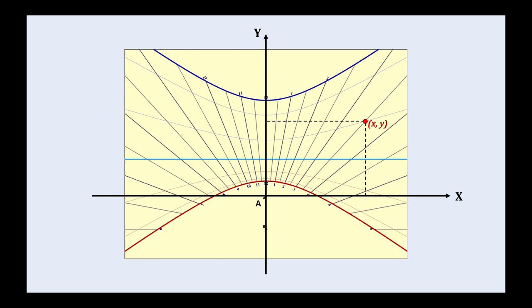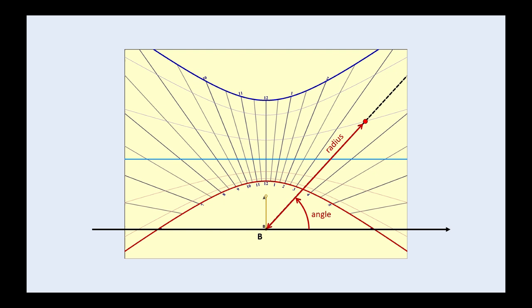Some points are given in Cartesian coordinates in an xy-axis system centered at point A. Other points are given in polar coordinates with respect to point B. Each point is then given with an angle and a radius.